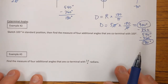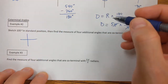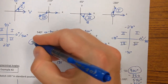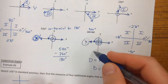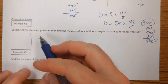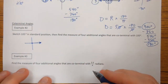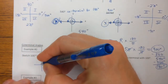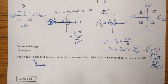Let's slide down to example two. Example two says: sketch 100 degrees in standard position. There's my initial side. I know 100 degrees is a little bit past 90 degrees, so I'm going to open up roughly here in quadrant two.